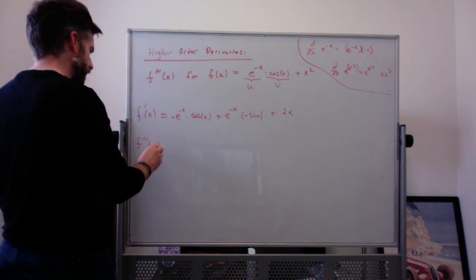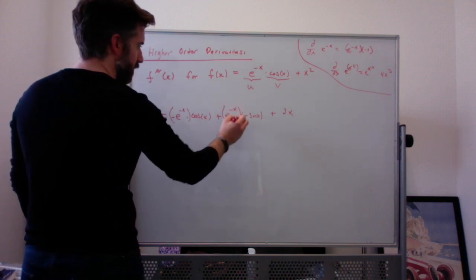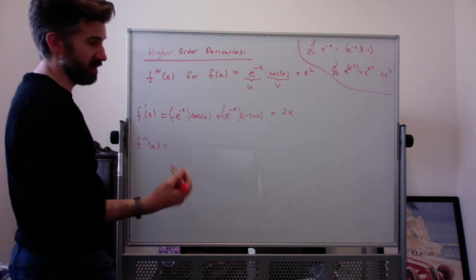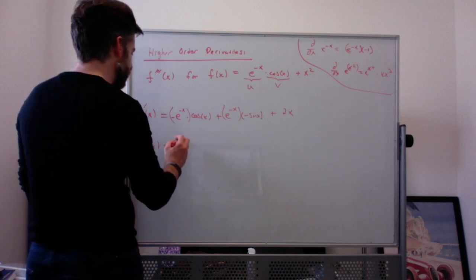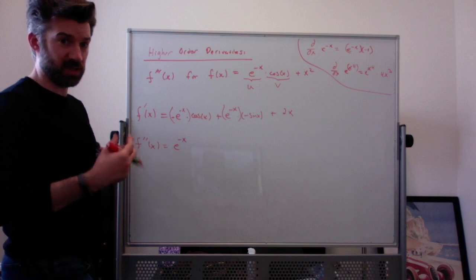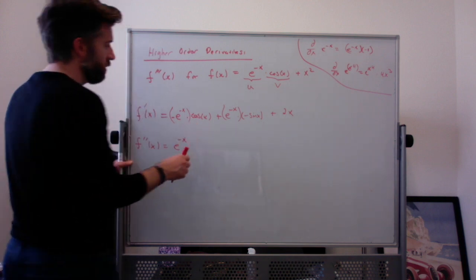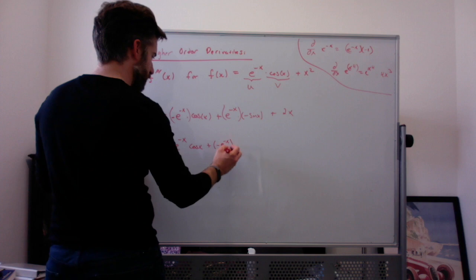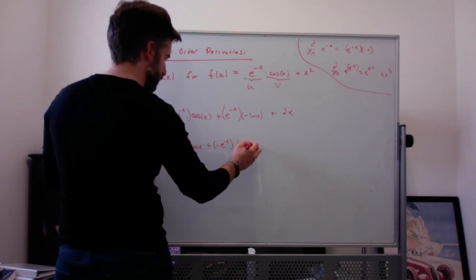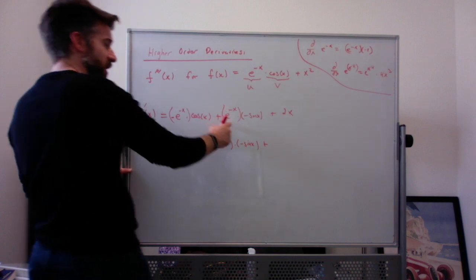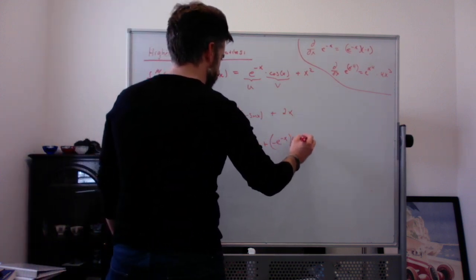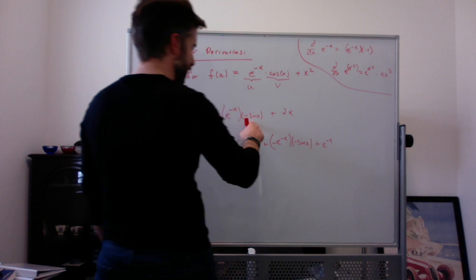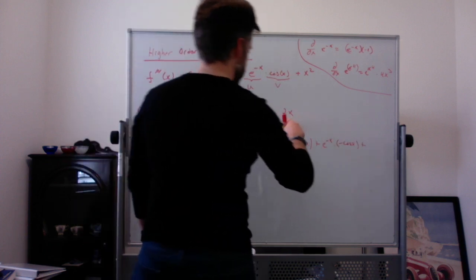Now the second derivative — we use the product rule for each piece. The derivative of negative e to the negative x is negative e to the negative x times negative 1, which is positive e to the negative x. E to the negative x just keeps alternating from positive to negative. So we get positive e to the negative x times cosine of x, plus negative e to the negative x times the derivative of cosine, which is negative sine, plus the derivative gives negative e to the negative x times negative sine of x. Leave that alone and get e to the negative x times the derivative of negative sine, which is negative cosine, plus the derivative of 2x, which is 2.